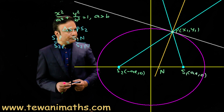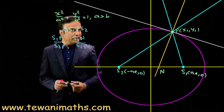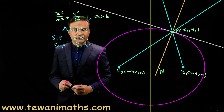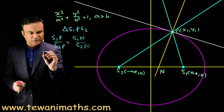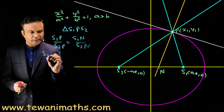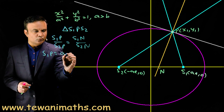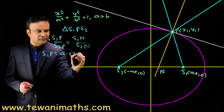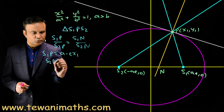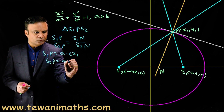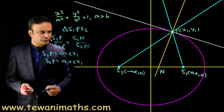Now S1P and S2P are the focal lengths of point P. We have the expressions: S1P = a − ex1 and S2P = a + ex1.